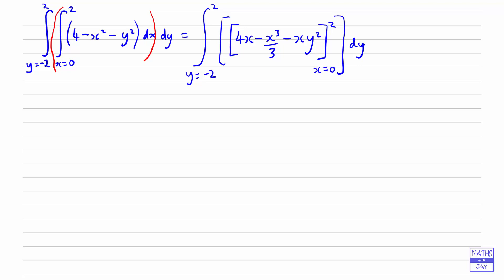Now we're going to substitute in our limits. We've still got y equals minus 2 to 2 on the outside there. Substituting 2 into our answer we're going to get 4 times 2 minus 2 cubed over 3 minus 2 times y squared. When we substitute x equals 0, well every term has got an x in it so we're just going to get 0 there.